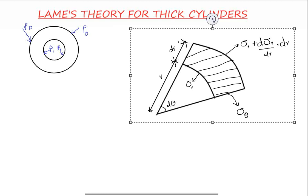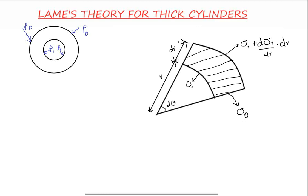We have the radial stresses — the change sigma r plus d sigma r after the deformation — and the tangential stresses. If I were to solve this diagram, we would have sigma r times the radius times the change in d theta. Since sigma r is facing outwards, it will have a minus sign.